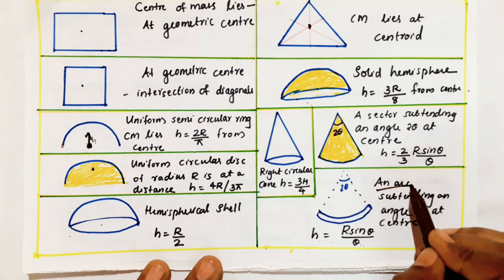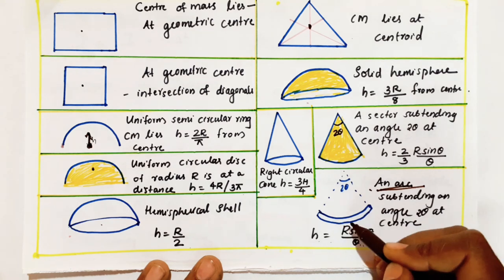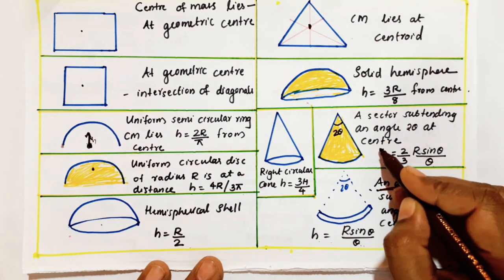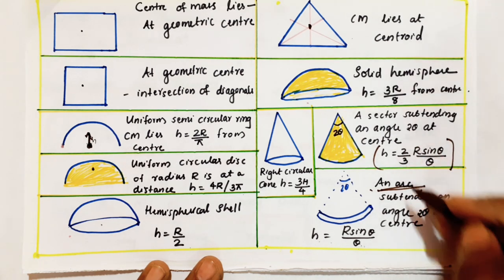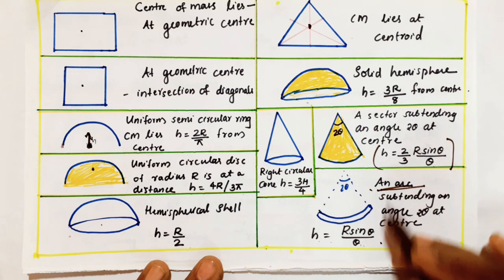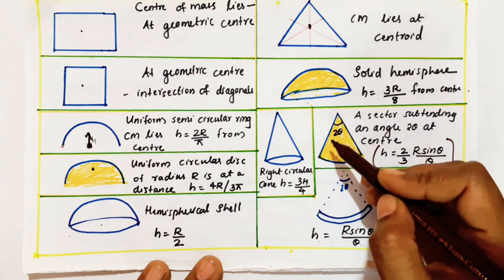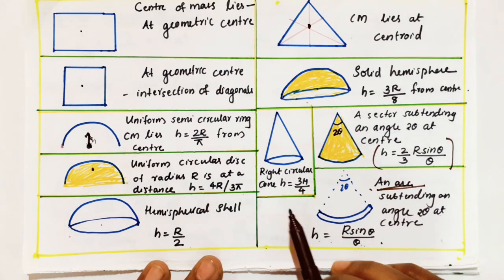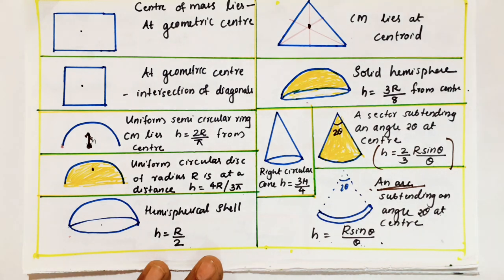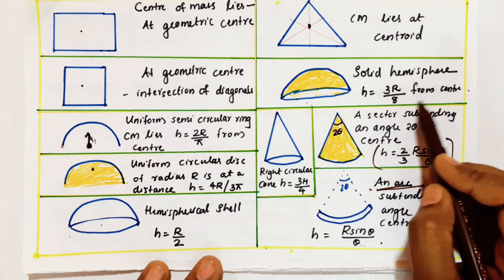For an arc subtending an angle of 2θ, remember: h equals r·sinθ by θ. If instead of an arc it is a sector, it will be 2/3 × r·sinθ by θ. The sector's center of mass is 2/3 of the arc's value, and in both cases the angle subtended is 2θ. For a right circular cone, h equals 3H by 4, where H is the height of the cone.